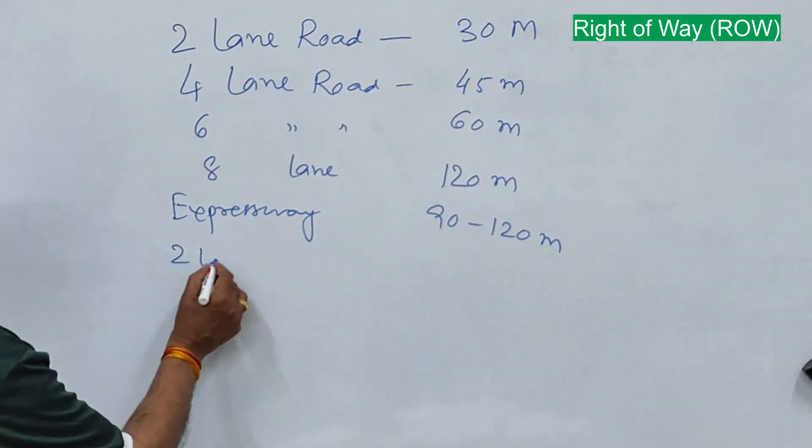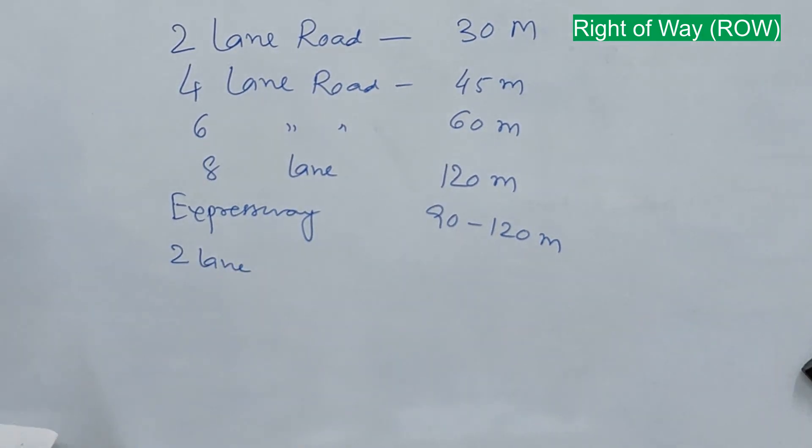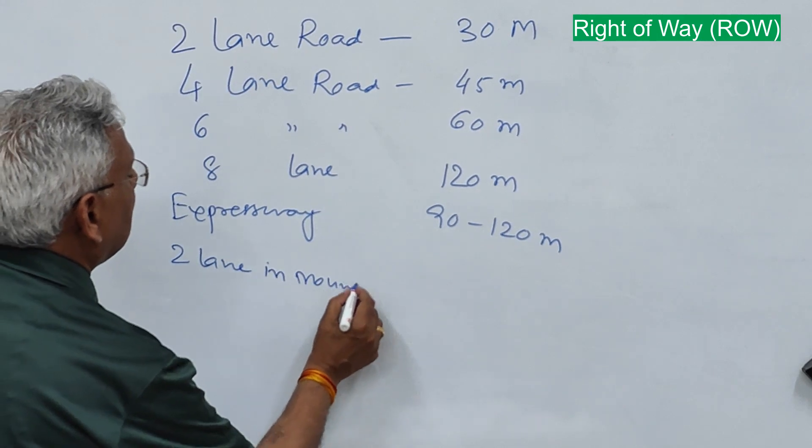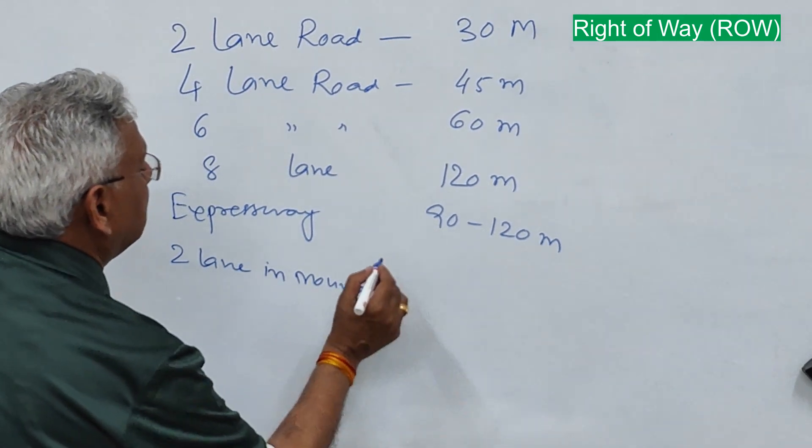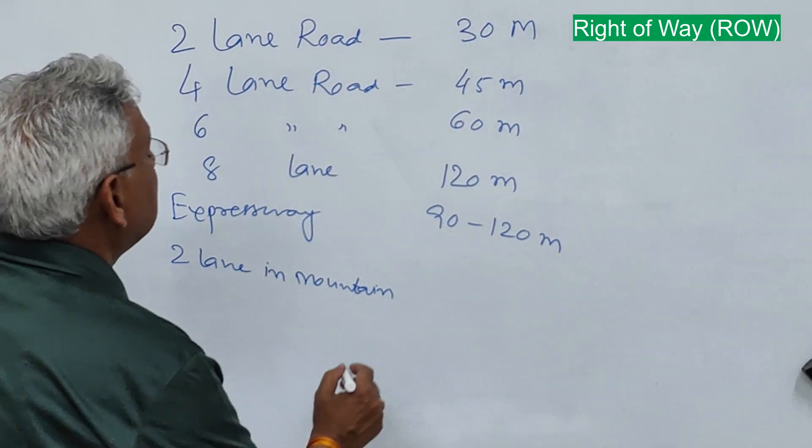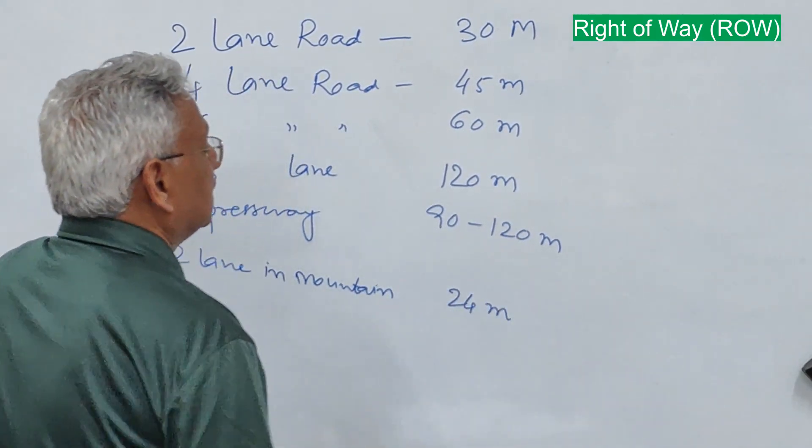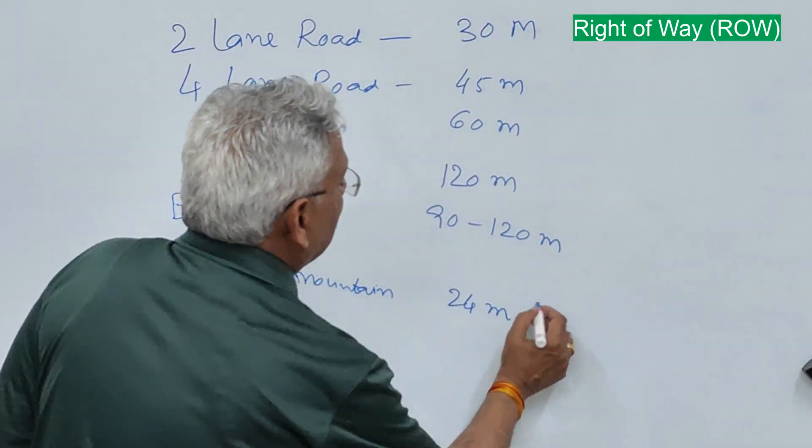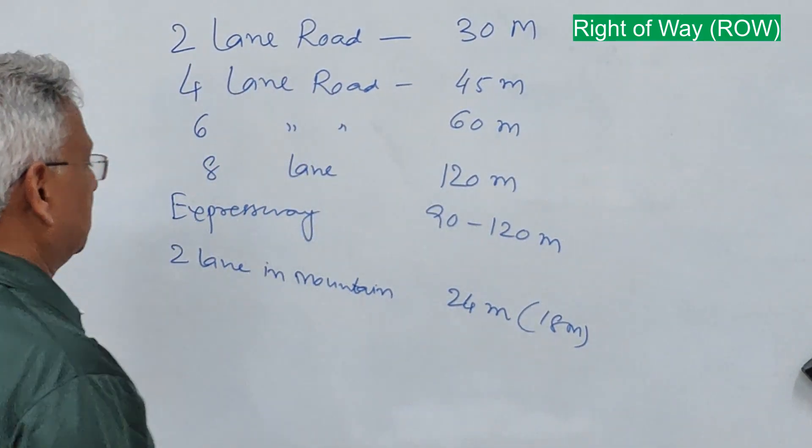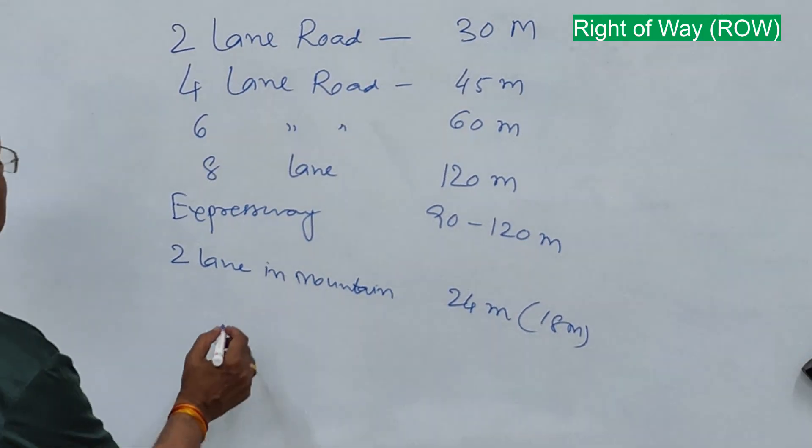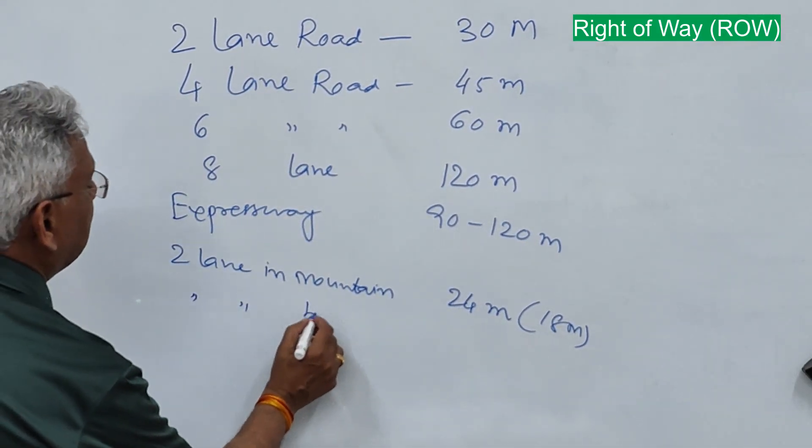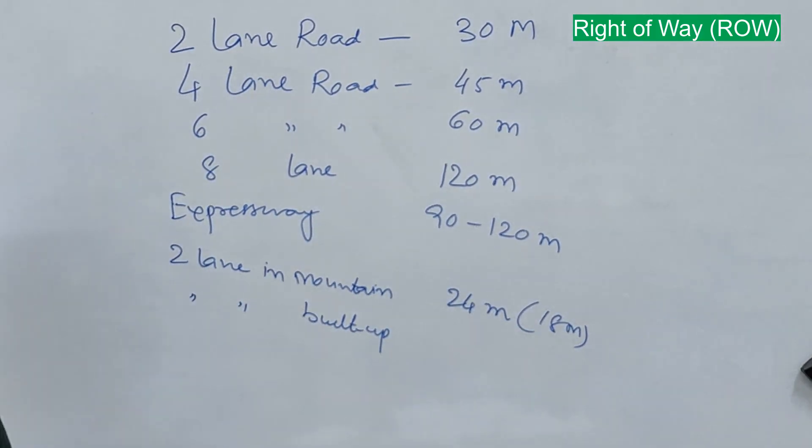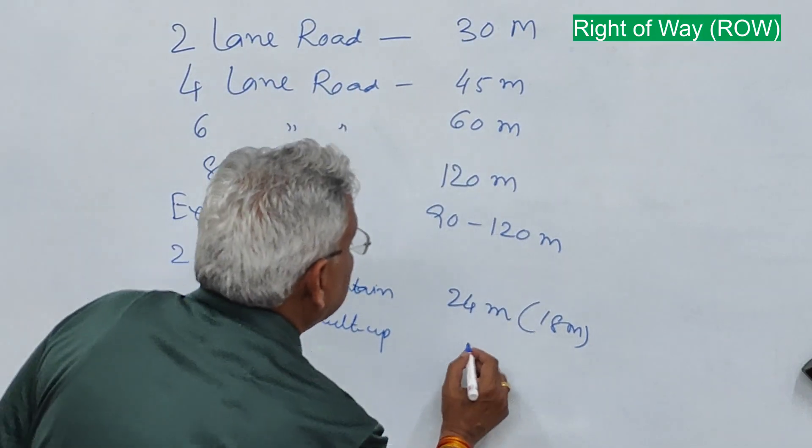For two lane road in mountainous regions or hilly area this is 24 meter. And in exceptional cases it can be 18 meter also. And similarly for a two lane road in built up area located in mountainous and steep terrain this is 20 meter.